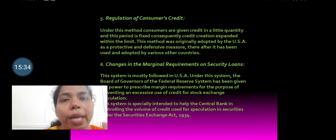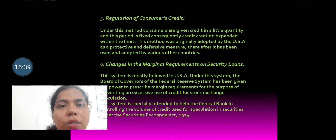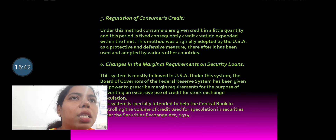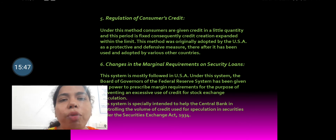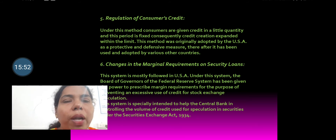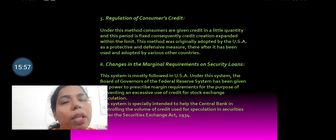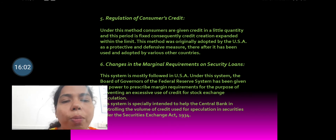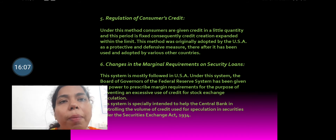The next qualitative method is regulation of consumer credit. This is specifically in terms of consumer credit. Consumers ask for loans for buying consumer durables, and they borrow loans for that purpose. Restrictions are imposed on consumer credit to regulate the amount that can be borrowed for purchasing consumer durables.